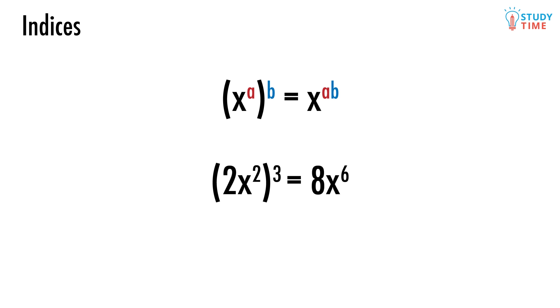2 times x to the power of 2 to the power of 3. Keep in mind that we don't only need to worry about the indices here, but we also have to do something about the 2. The reason why is because it's the 2 and the x squared that are getting raised to the power of 3. When 2 gets cubed, it turns into 8. So our overall answer has to be 8 times x to the power of 6.